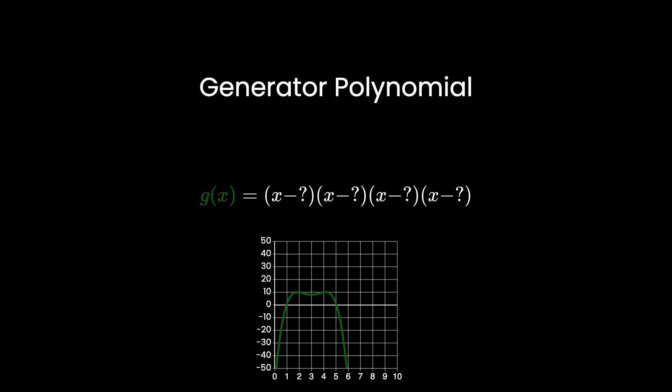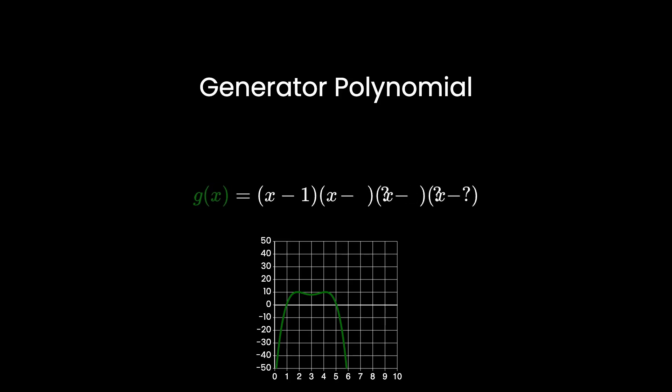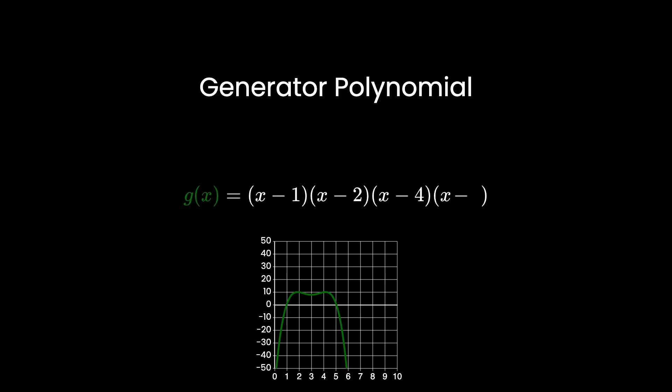Let's choose four, so we can fix at most two errors. We also need to know the roots of this polynomial. I'll just arbitrarily choose powers of two: 1, 2, 4, and 8. This will be the same for every message sent from this computer, so we can also use this for the decoding computer when we get to it.